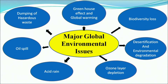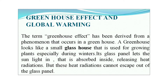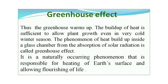The first major global environmental issue is greenhouse effect and global warming. The term greenhouse effect has been derived from a phenomenon that occurs in a greenhouse — a small glass house used for growing plants, especially during winters. Its glass panels let sunlight in, which is absorbed inside, releasing heat radiation, but these heat radiations cannot escape out of the glass panel, thus the greenhouse warms up.